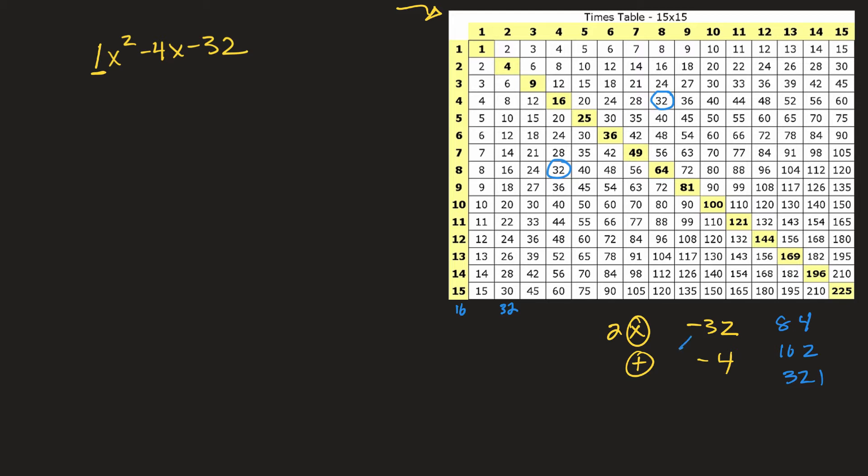Now, if it multiplies to a negative 32, one of these has to be negative. So it's either negative 8 times 4, or I guess I could put 8 times a negative 4. Negative 16 times 2, you get the idea. So I want whichever one of those adds to a negative 4. It looks like it's that one right there, because negative 8 plus 4 will be a negative 4, and if I multiply the two, it gives me a negative 32.